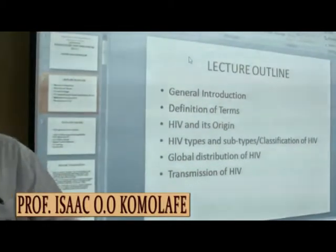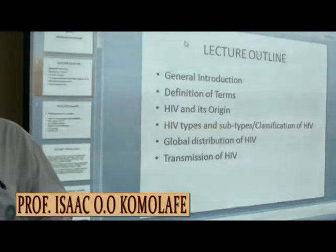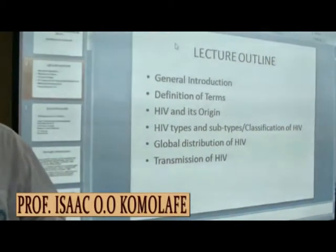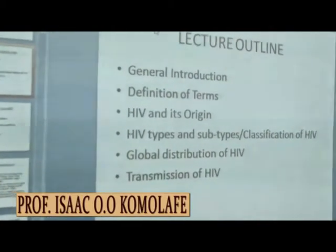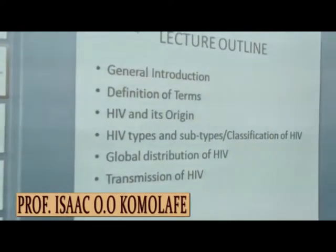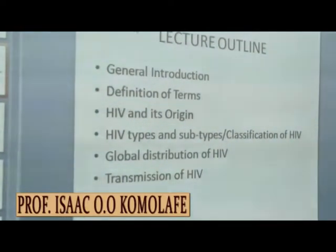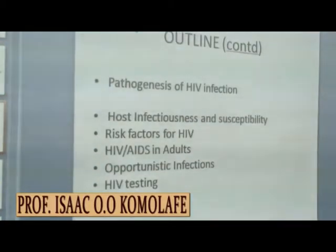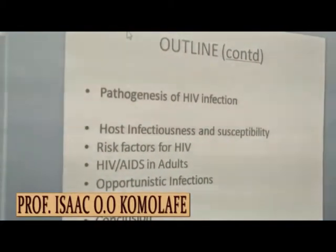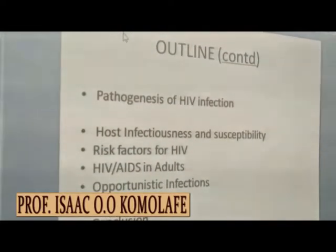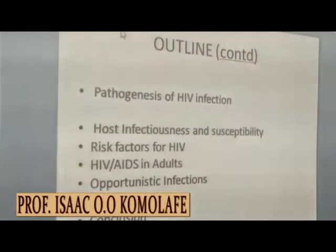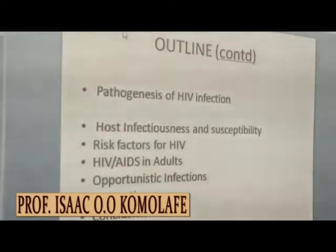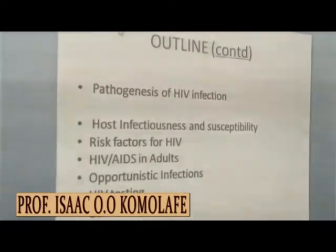I am going to follow this lecture outline: first, a brief general introduction of the topic, definition of terms, HIV and its origin, HIV types and subtypes — that is, classification of the virus — global distribution of HIV, transmission of HIV, pathogenesis of HIV infection, post-infectiousness and susceptibility, risk factors of HIV, HIV AIDS in adults and opportunistic infections, then HIV testing before I conclude.